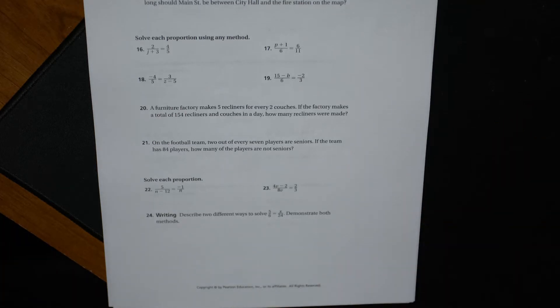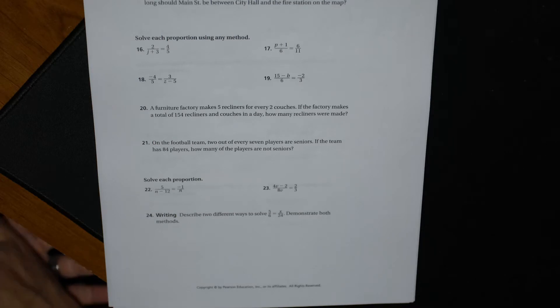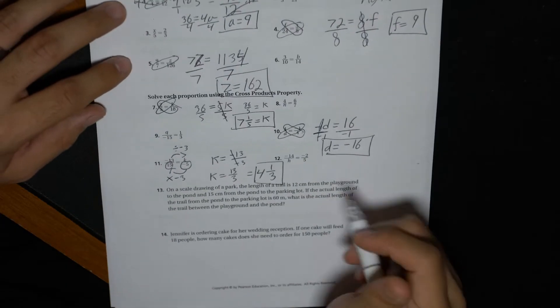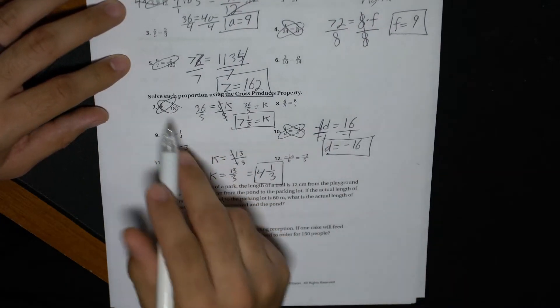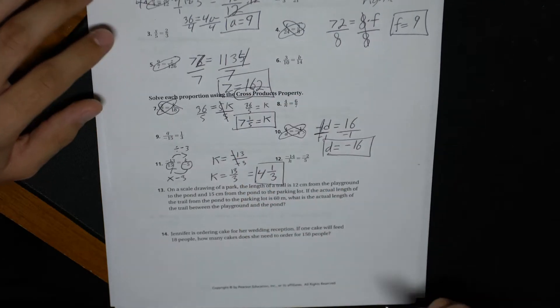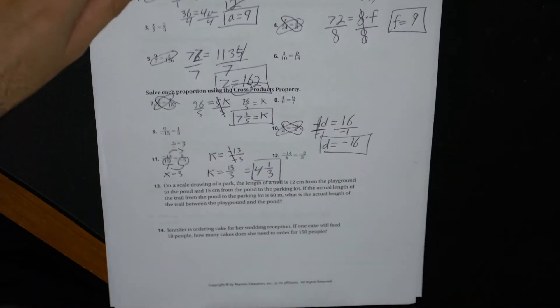Hey everyone. This is part two for the solving proportions. Part two is very similar to the first part. If we actually look at the first page, we're going to be using this butterfly effect, which means the cross product, which means multiply across each other.